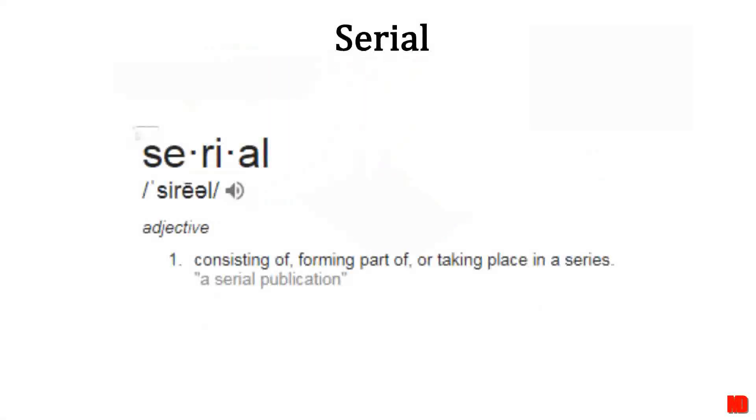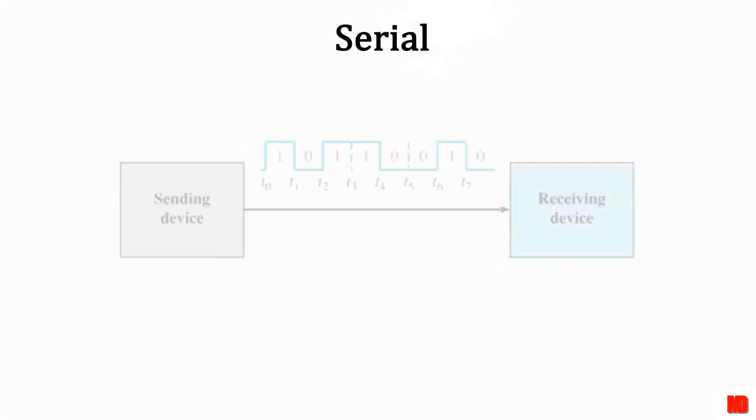First, let's look at serial. The dictionary definition of serial just means that something happens in a series. That's what's happening in serial data transfer. One bit is read at a time until all the bits have been read. This also means that it takes as long to read the data as there are bits.